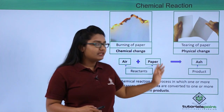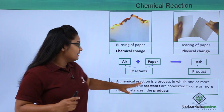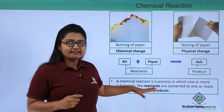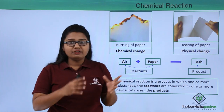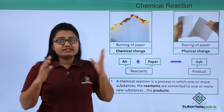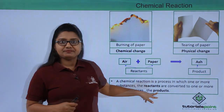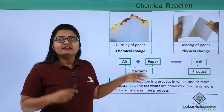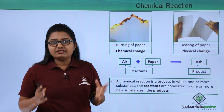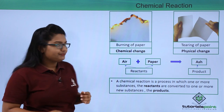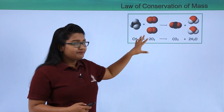We define a chemical reaction as a process in which one or more substances (the reactants) are converted to one or more new substances (the products). Now let us look at another example of this kind of chemical reaction.